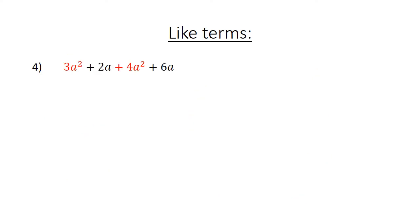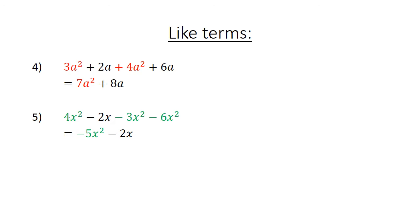Like terms: we have 3a squared plus 2a plus 4a squared plus 6a. The like terms have the same color, giving us 7a squared plus 8a. Again with like terms in the same color: 4x squared minus 2x minus 3x squared minus 6x squared equals negative 5x squared minus 2x.